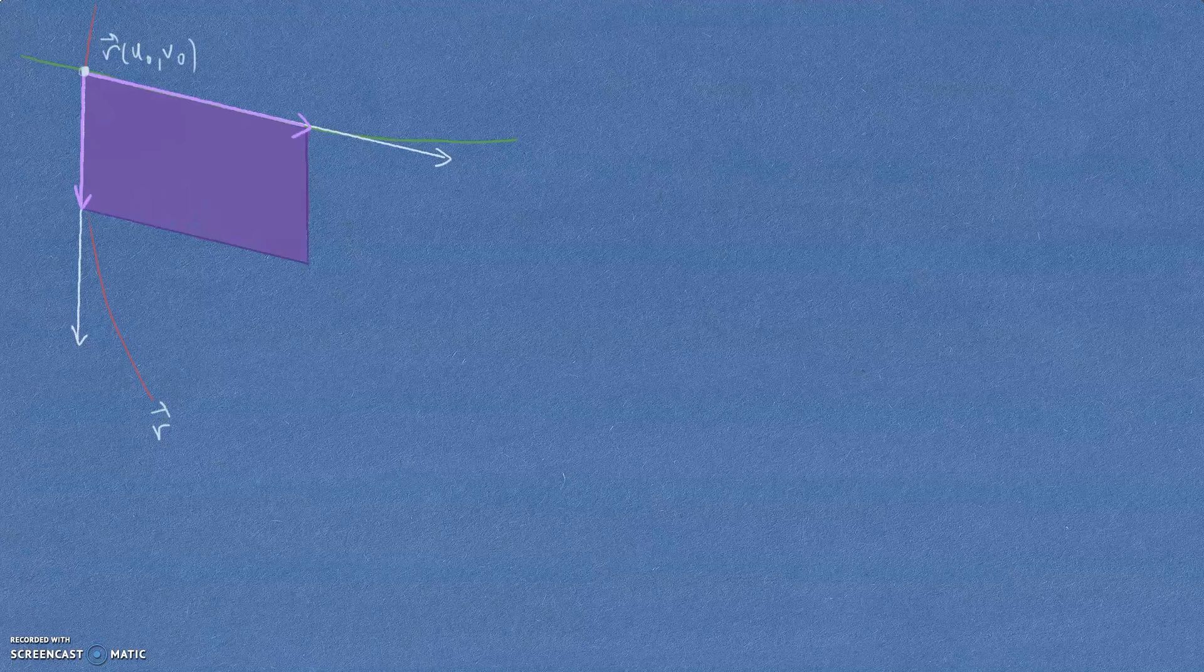Okay, so let's work out this area calculation. If you recall, we were looking at our plot here. We were looking at one specific point here. R calculated at U0 comma V0.